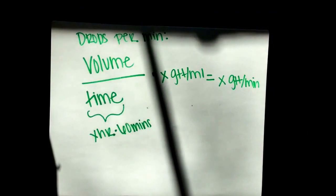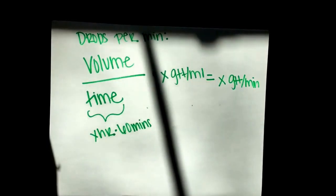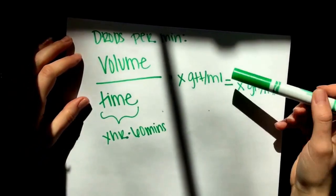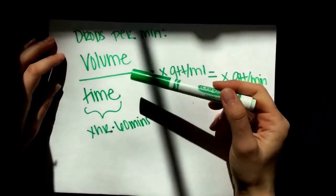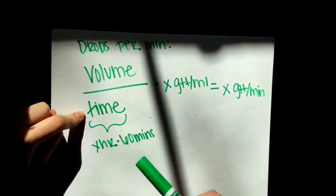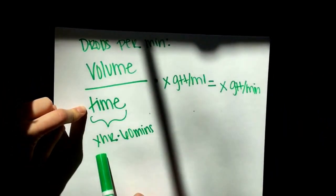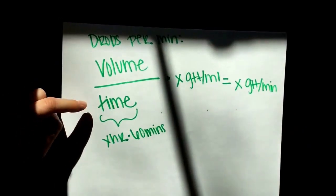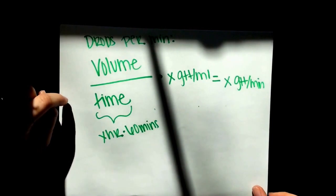The next equation I want to show you is drops per minute formula. Drops per minute tells you another way of calculating the rate at which you could possibly set your administration set. This is the equation I use: volume over time multiplied by drops per milliliter, which gives us drops per minute. When we're talking about time, I take how many hours I'm infusing my product and multiply that by 60, which gives me my time equation.